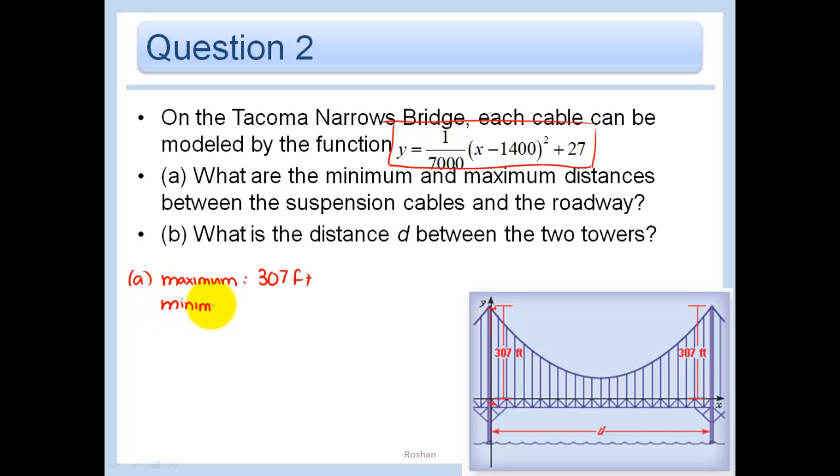Our minimum is going to be whatever the height is right at our vertex. Since we have this function, we know that our vertex right here is at the point 1427. That means that this height right here is just 27. In other words, the minimum is 27 feet. In part B, they ask us, what is the distance between the two towers? I know that I went 1,400 feet to get to the vertex. So I would have to go another 1,400 feet to get to the other tower. So 1,400 plus 1,400 is equal to 2,800 feet.